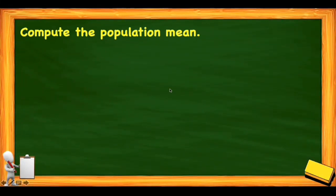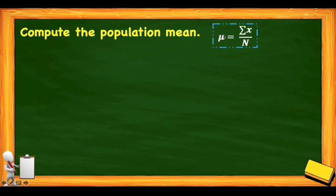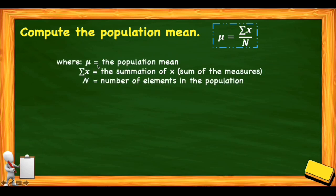First, we will compute the population mean. The symbol for population mean is mu (μ). The formula is: mu is equal to the summation of x over n, where mu is the population mean, the summation of x is the sum of all given values, and n is the number of elements in the population.